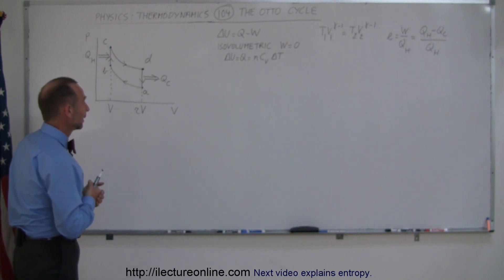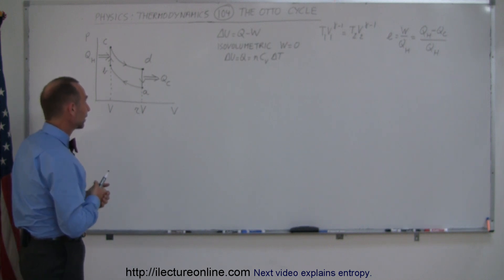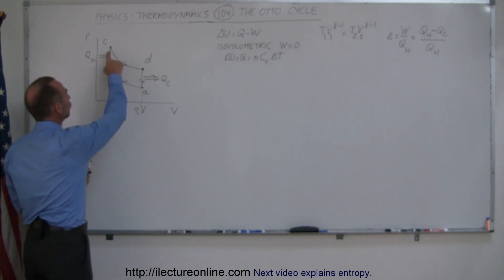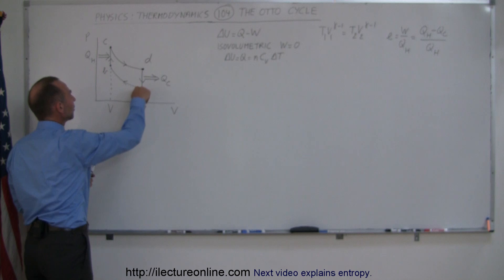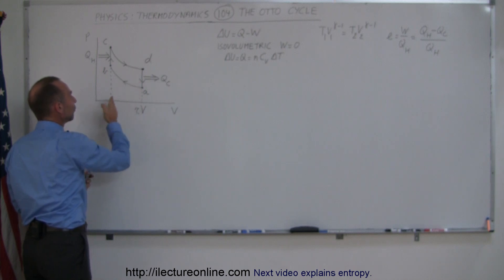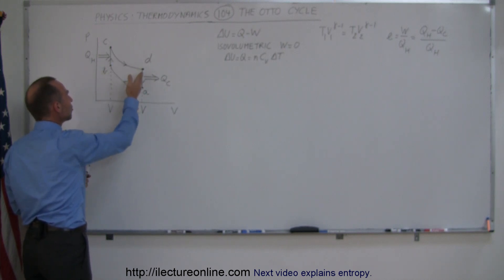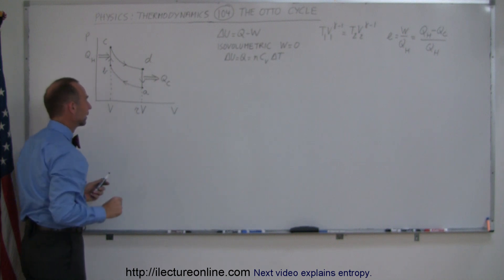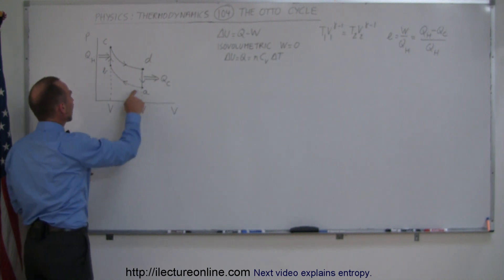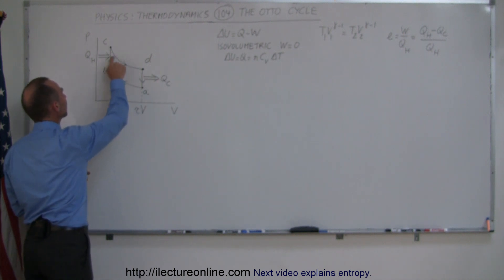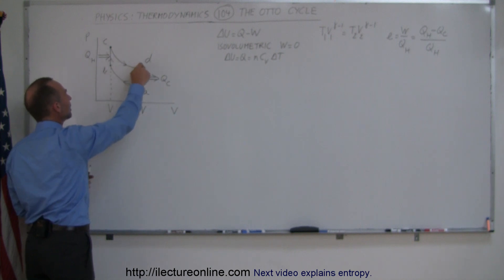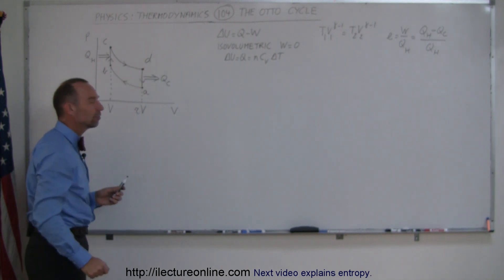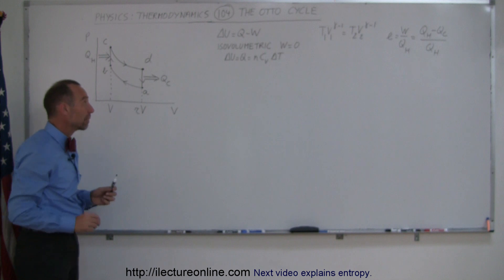An Otto cycle consists of two processes that are isovolumetric, where the volume doesn't change, and two processes that are adiabatic. Going from A to B is adiabatic, going from B to C is isovolumetric, going from C to D is adiabatic, and going from D to A is isovolumetric.